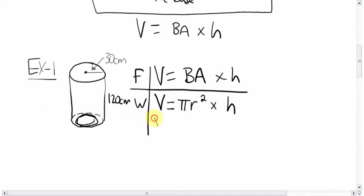Subbing in the numbers, V we don't know, pi is 3.14. The radius is this, halfway across radius, 30 centimeters. Don't forget to square it. Multiply by the height of 120.